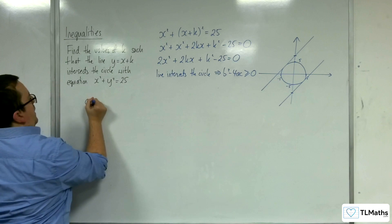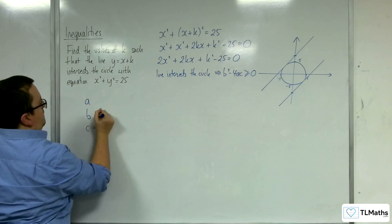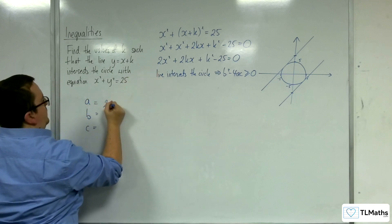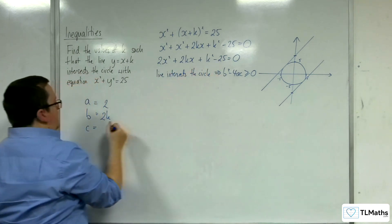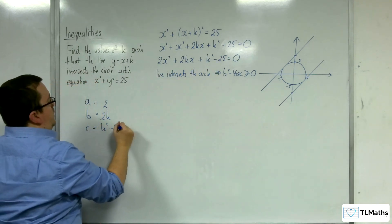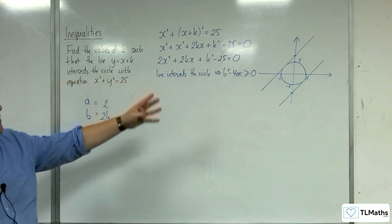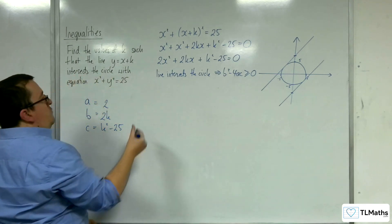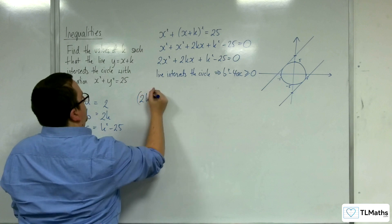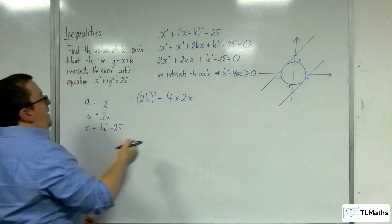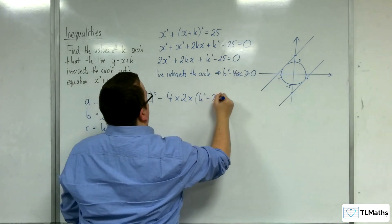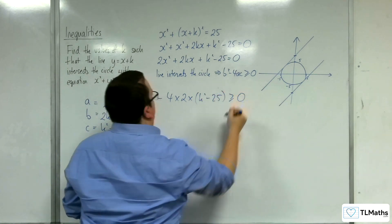So for us, we've got a, b, and c. So a is 2, b is 2k, and c is k squared minus 25. So I'm going to substitute that into b squared minus 4ac is greater than or equal to 0. So 2k all squared take away 4 lots of a times c is got to be greater than or equal to 0.